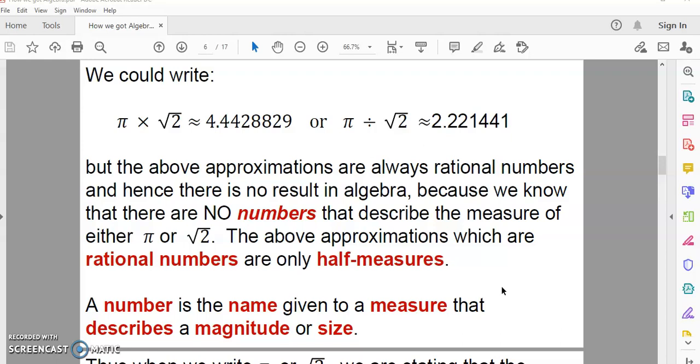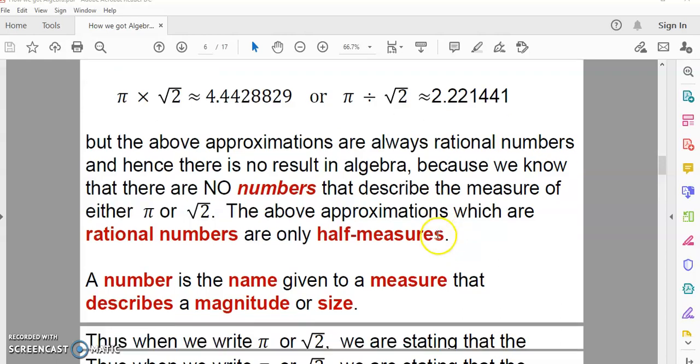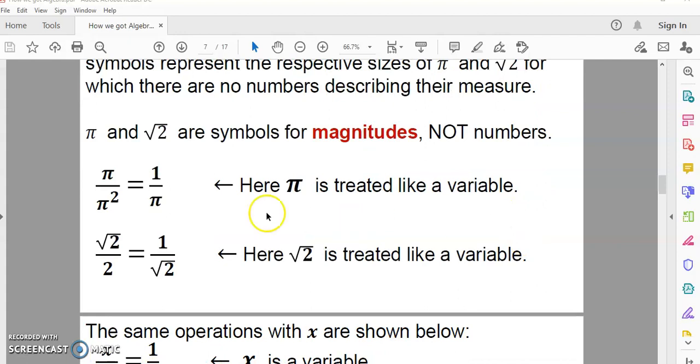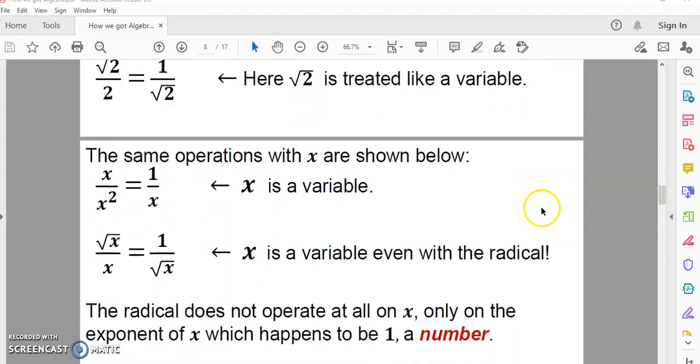A half measure is not a measure. You can't have a partial measure or a half measure or an approximation and call it a measure. A measure means the complete measure. And that's why a number is the name that's given to a measure that describes the magnitude or size. So, when we write these symbols, we're stating that they represent the respective sizes, but there are no numbers describing the measure of these sizes. In both these equations, pi is treated like a variable, and so is square root 2. They're treated exactly like variables, no difference.